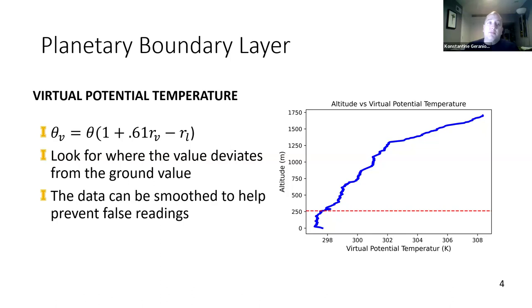At the University of Idaho an algorithm was developed using three different methods. The first method is the virtual potential temperature. What we're looking at is the virtual temperature as it changes in altitude. We want it to deviate from the ground value. Where it begins to deviate from the ground value is where we determine the top of the planetary boundary layer to occur. Because this is experimental data, we have smoothed our data using a spline. We determined the planetary boundary layer to be about 260 meters. In the equation you have the potential temperature and your mixing ratios with liquid and water vapor mixing.